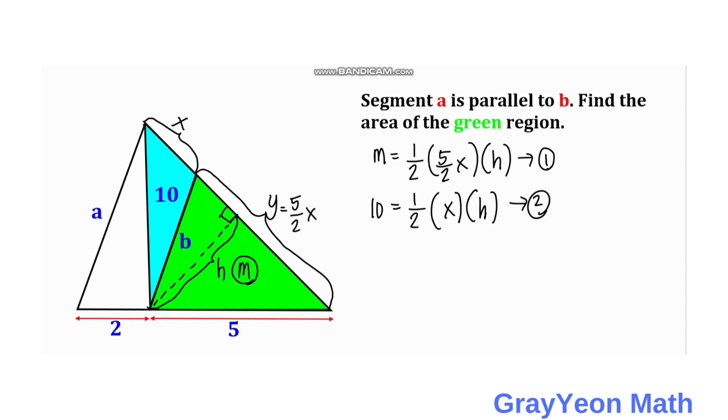Next, we divide equation 1 by equation 2. So m over 10 equals, we cancel 1 half and 1 half, and x and h, equals 5 halves. Cross multiplying, we have m equals 5 times 10 over 2, which gives us 25.